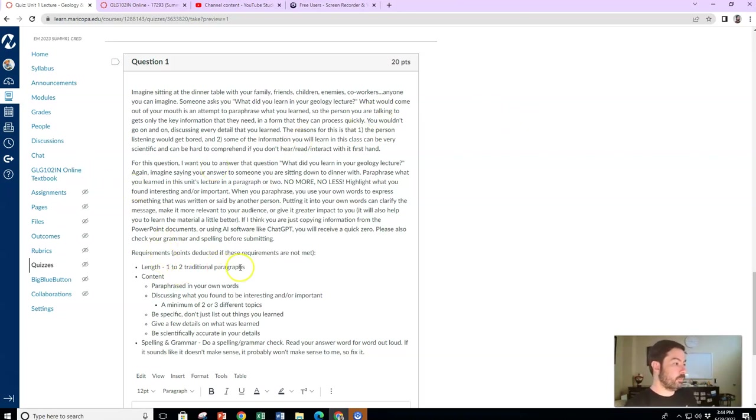So requirement is one or two traditional paragraphs. No more, no less. If it's one paragraph, dynamite, two paragraphs, great. Three paragraphs, too much. Paraphrase in your own words what you thought was interesting or important. Discuss a minimum of two or three different topics. Be specific. Give details on what you learned. Don't just list out things. Don't just be like, I learned about plate tectonic theory and this is the definition. I learned about evolution and this is the definition. No. Give some details. Tell me why it was interesting or important. Imagine yourself having a conversation.